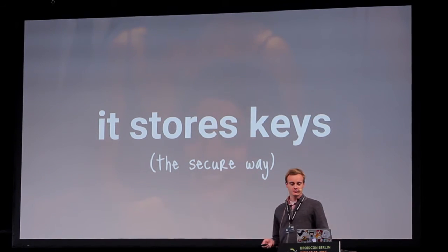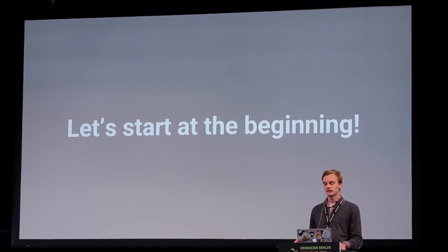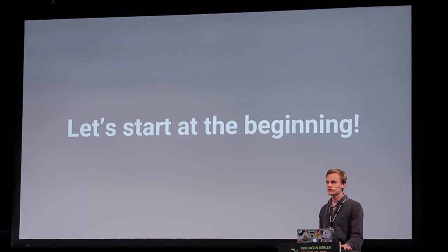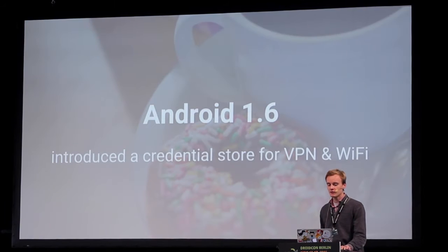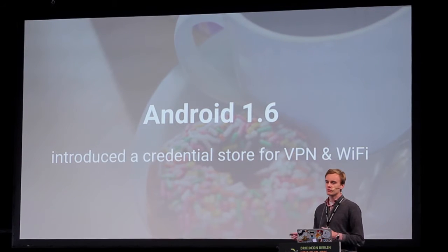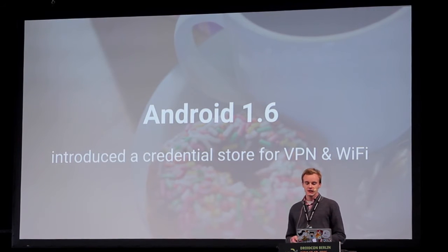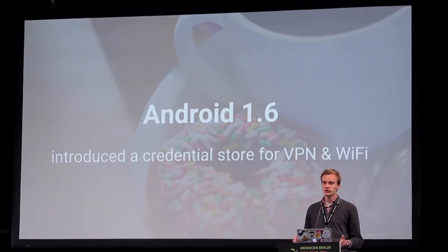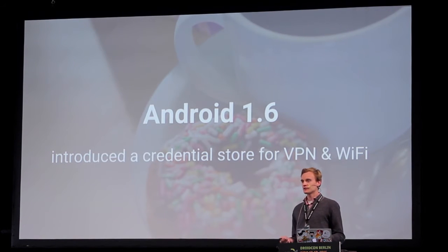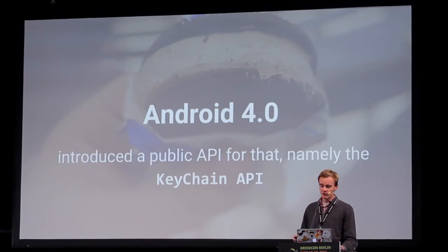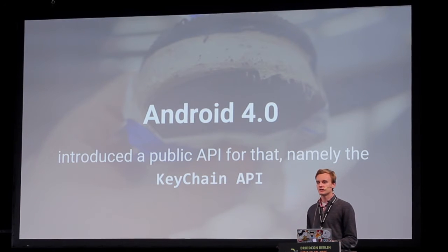Most OS's provide system services to securely store authentication keys so developers don't have to implement them by themselves. Android 1.6 had a credential storage for VPN and Wi-Fi, but unfortunately that storage wasn't accessible by apps. The key infrastructure was managed via the Settings app. Android 4.0 finally introduced the public KeyChain API, which made it possible to install certificates.